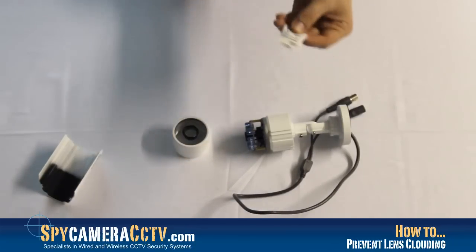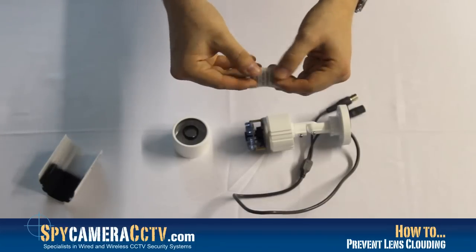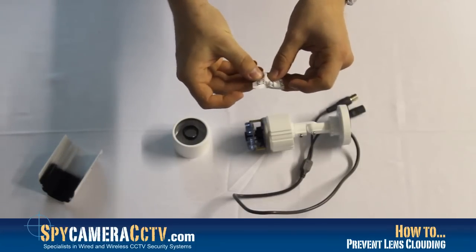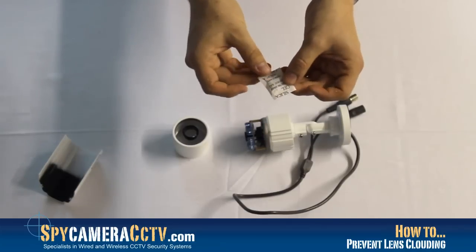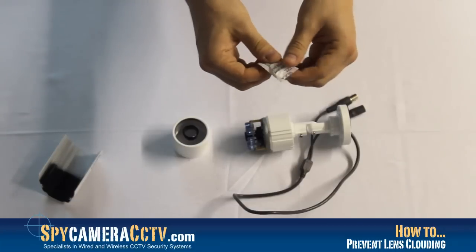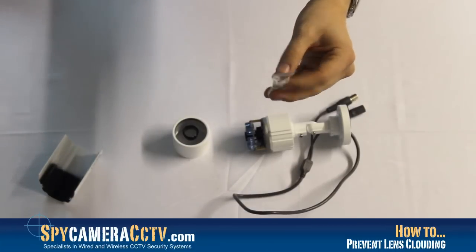Or the best preventative measure we can take is actually with one of these here. This is the silica gel that you tend to get in most of our camera packages. You may get it in a lot of electronics, sometimes with trainers. All this silica stuff does here is absorb moisture in transit and we can use this to our advantage here.